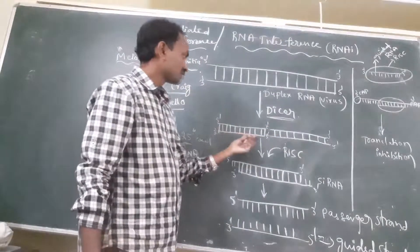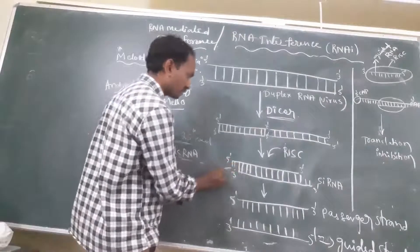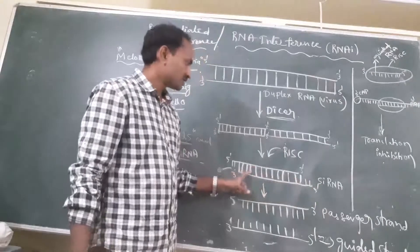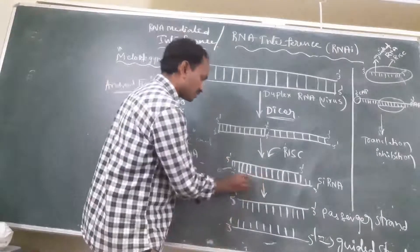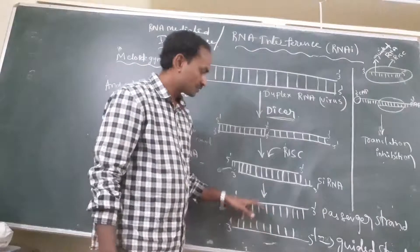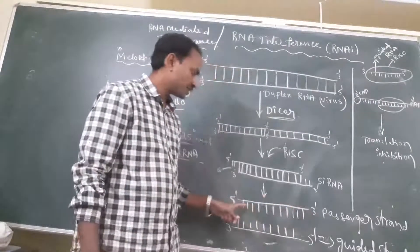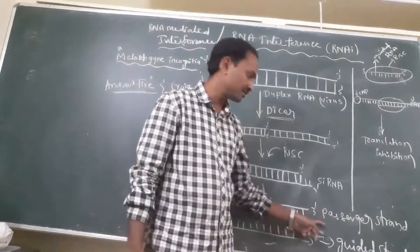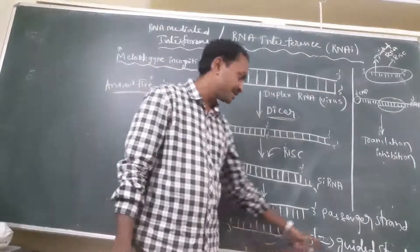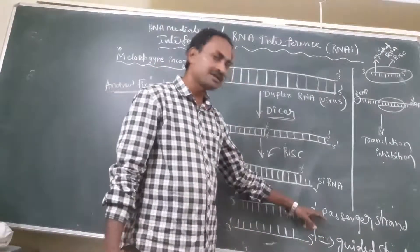This small double-stranded RNA is called siRNA. The siRNA dissociates into two single-stranded RNA molecules. The 5' to 3' single-stranded RNA strand is called the passenger strand, and the 3' to 5' single-stranded RNA strand is called the guide strand.